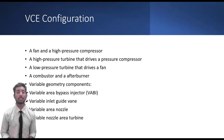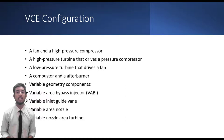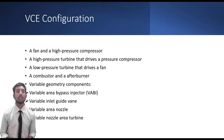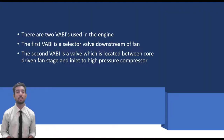The configuration of a VCE includes a fan and a high pressure compressor, a high pressure turbine that drives the high pressure compressor, a low pressure turbine that drives the fan and a compressor, with an afterburner. Variable geometry components include: Variable Area Bypass Injector (VABI), Variable Inlet Guide Vanes, Variable Area Nozzle, and Variable Nozzle Area Turbine. Two VABIs are used: the first VABI is a selector valve downstream of the fan; the second VABI is a valve located between the core-driven fan stage and the inlet to the high pressure compressor.